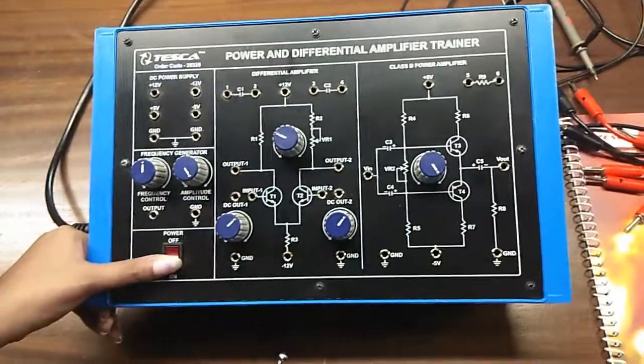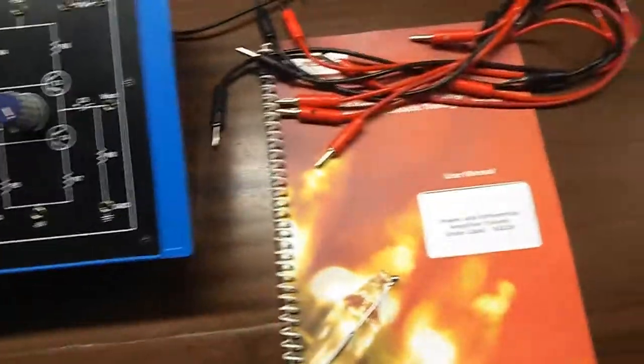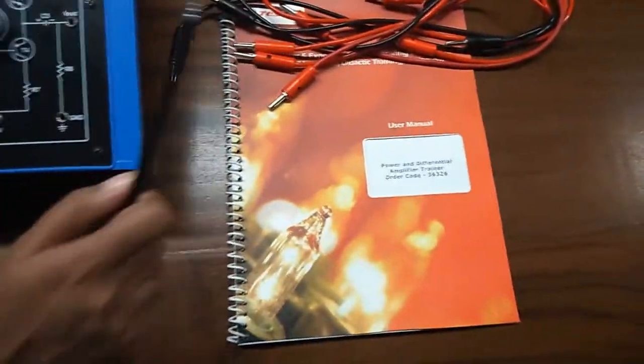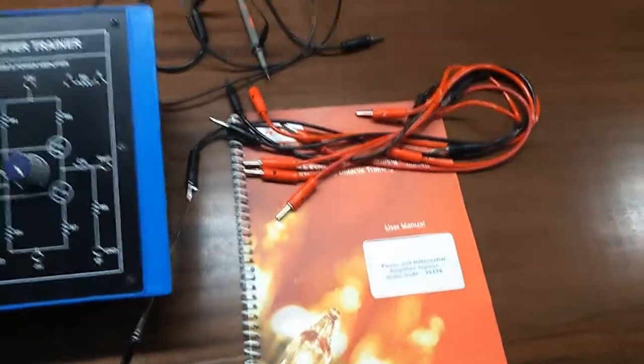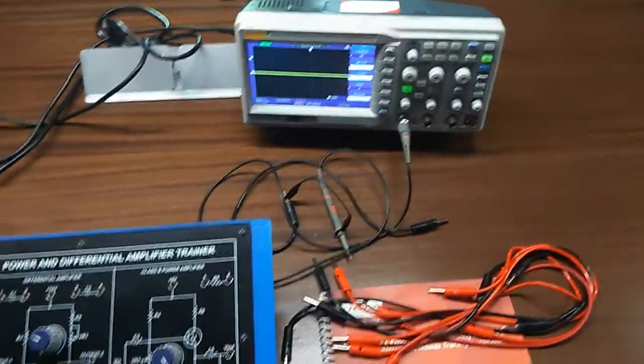This is the main switch to turn on or off the kit. This is the user manual and these are patch cords. These all are included in this kit and to do this experiment we will need a CRO or DSO.